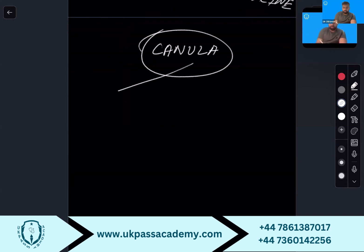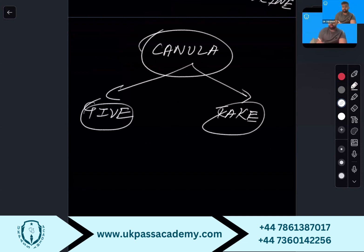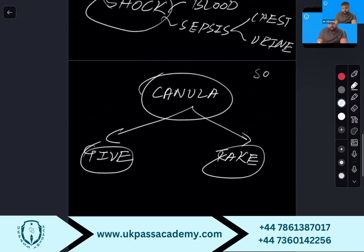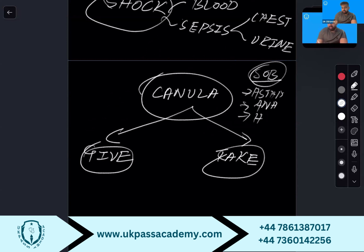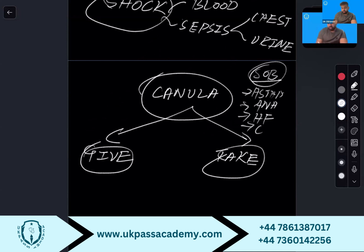This Part C cannula section is key in PLAB2 — it divides into 'give and take.' Whenever you pass a cannula, you must verbalize it in every scenario. The shortness of breath scenarios are asthma, anaphylaxis, heart failure, and COPD. If you focus on these, your score could be 12 out of 12.